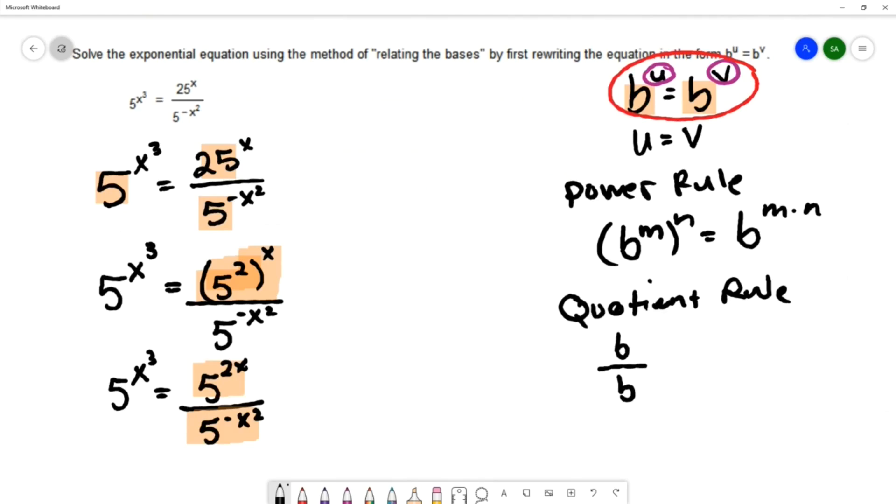Let's say we have b to the m over b to the n. If we have the same base with expressions being divided, we're going to subtract the exponents. So that's going to give b to the m minus n.